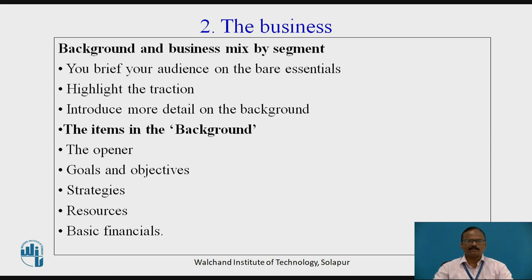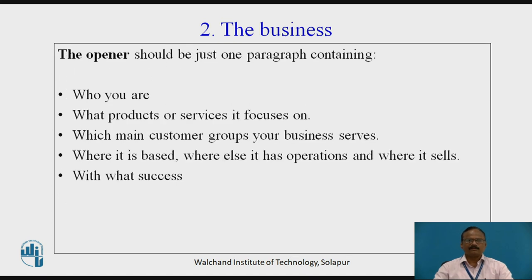The components in the background section are: first, the opener; second, goals and objectives; third, strategies; fourth, resources; fifth, basic financials. The opener should be just one paragraph containing who you are, what products or services it focuses on, which main customer groups your business serves, where it is based, where else it has operations and where it sells, and what success in terms of revenues and operating margin — operating margin is operating profit divided by sales — and by which year you will achieve it.